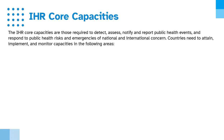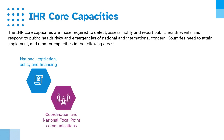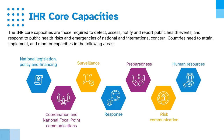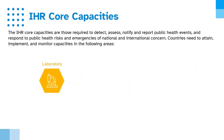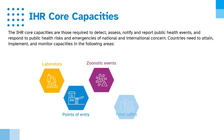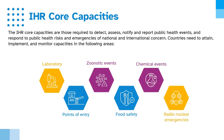Countries need to attain, implement and monitor capacities in the following areas: national legislation, policy and financing; coordination and national focal point communications; surveillance; response; preparedness; risk communication; human resources; laboratory; points of entry; zoonotic events; food safety; chemical events; and radio nuclear emergencies.